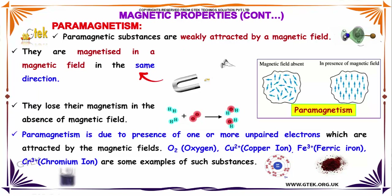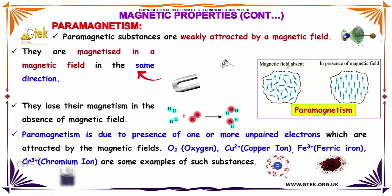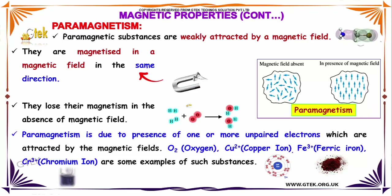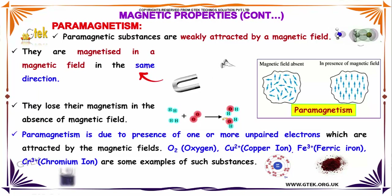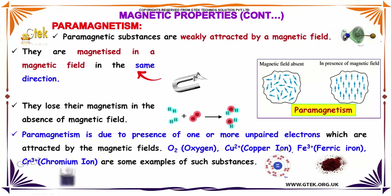Paramagnetic substances are weakly attracted by a magnetic field. They are magnetized in a magnetic field in the same direction and lose their magnetism in the absence of a magnetic field. Paramagnetism is due to the presence of one or more unpaired electrons, which are attracted by the magnetic field. Oxygen (O₂), Fe³⁺, and Cr³⁺ are typical examples of such substances.